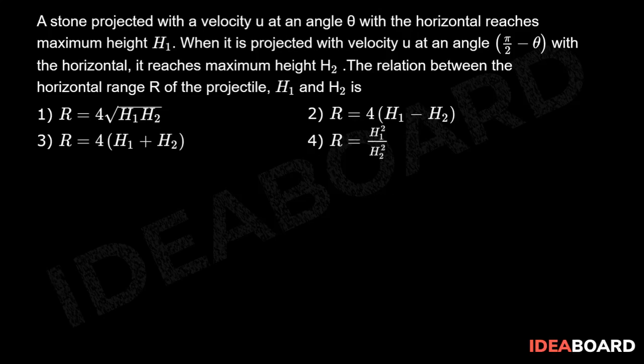Remember that range will be same for two angles θ and 90 minus θ. Therefore, r1 equals r2 equals u squared sine 2θ by g, which is equal to R.